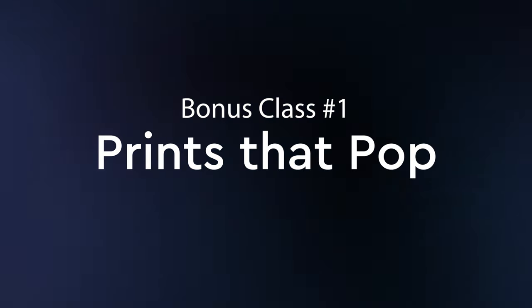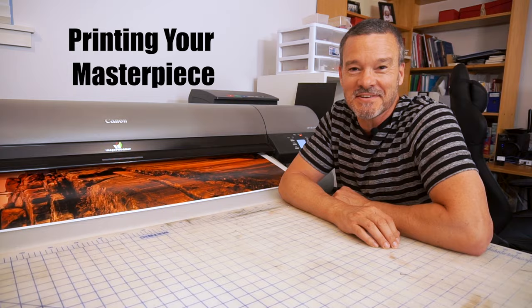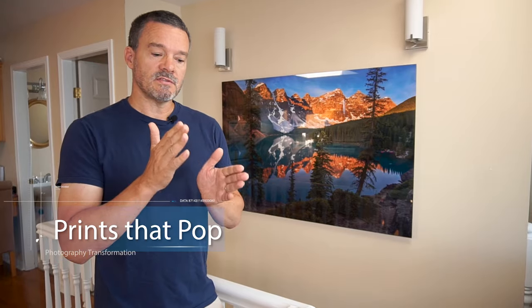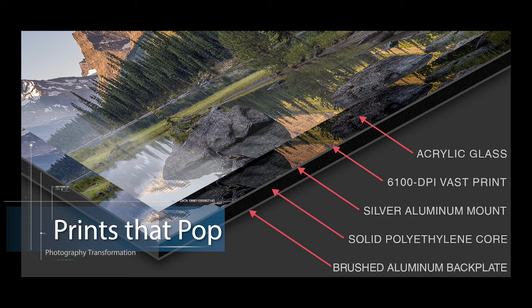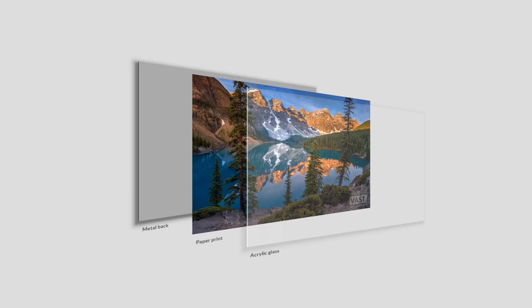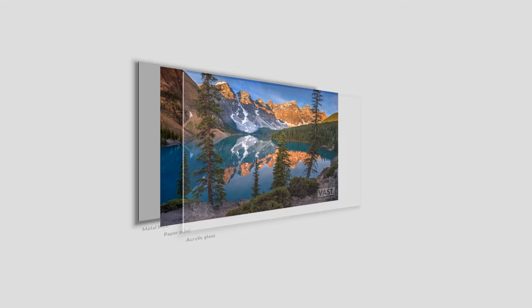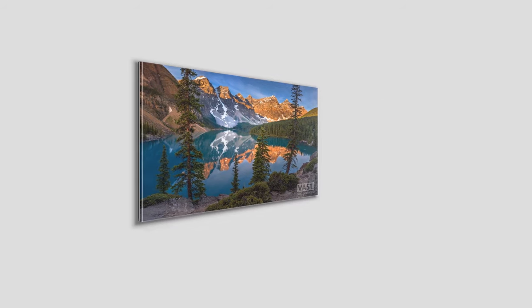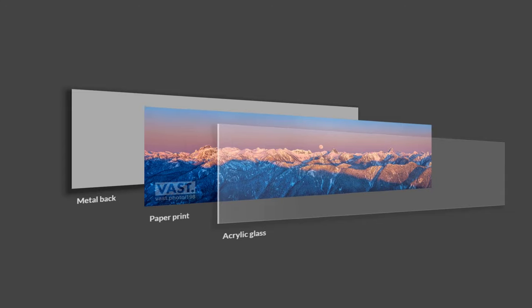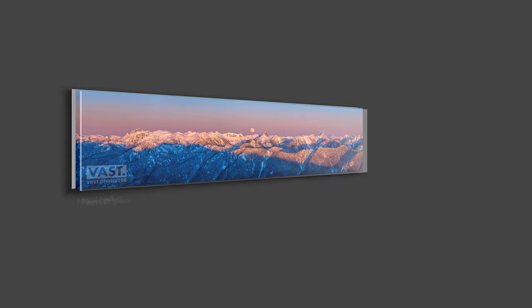Welcome to Class 5. It is time to print your piece of fine art. There is the print, printed on a metallic paper using a very high-resolution printer. Then behind the paper is a sheet of aluminum, and in front of the paper is a clear plastic, also known as acrylic. It creates a beautiful finished image.